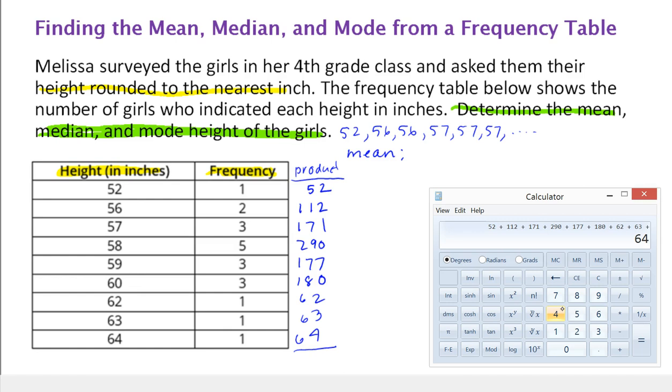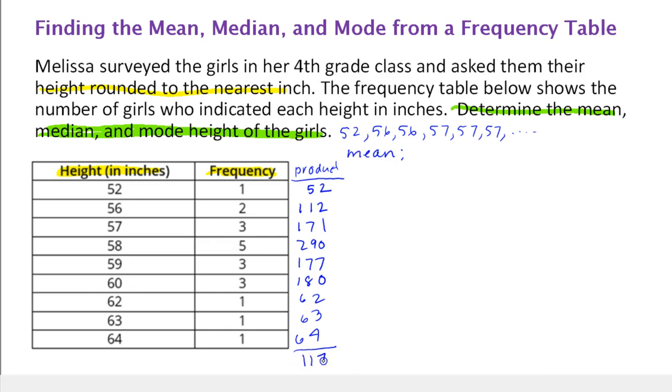Before I hit equals, I'm just going to check these numbers, because it's not hard to do this but it's very easy to punch in a wrong number. I would even suggest on an exam that you do this process twice to make sure that your answers match. 52, 112, 171, 290, 177, 180, 62, 63, 64—that's entered correctly. And we have our total is 1,171.